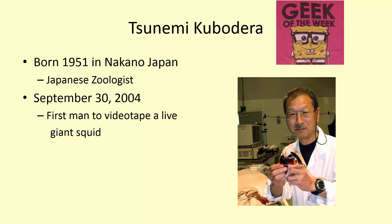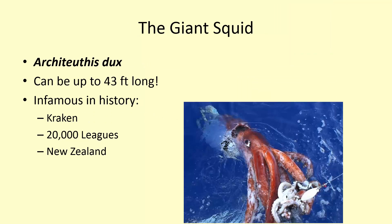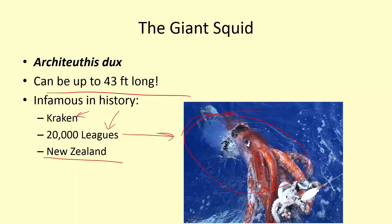Our geek of the week is Tsunemi Kubodera, a Japanese zoologist who in 2004 was the very first person to videotape a live giant squid — he is holding the beak of one right now. He was born in 1951 in Nakano, Japan. These giant squid can be up to 43 feet long, and they have an infamous place in history, such as the Kraken from Pirates of the Caribbean. The myth of Kraken goes back much further, and a giant squid was also the main villain in Jules Verne's 20,000 Leagues Under the Sea.